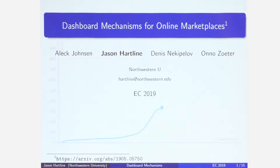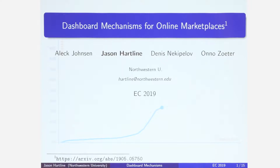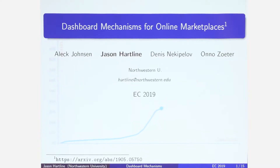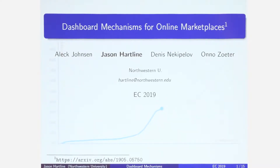This is joint work with a PhD student, Alex Johnson at Northwestern, Denis Nikapelov, who's an econometrics professor at UVA, and Ono Zuter, who is the head of machine learning at Booking.com. We began talking about this work three summers ago when Alec and Denis and I had the good fortune to spend two months at Booking talking with them very closely about how to better design mechanisms that they had.